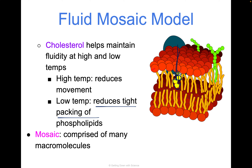The 'mosaic' part just means it's comprised of many things — not just one thing. We have the phospholipids, carbohydrates, proteins, glycoproteins, and all these different things. It's a mosaic — like when people smash plates and make a pretty picture, and when you see it, it's all together. Same thing with the plasma membrane.